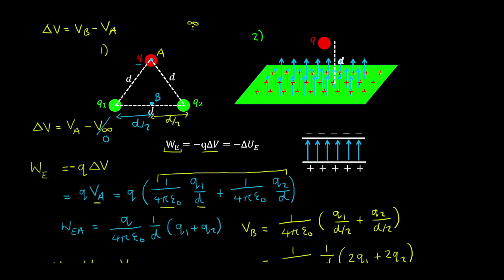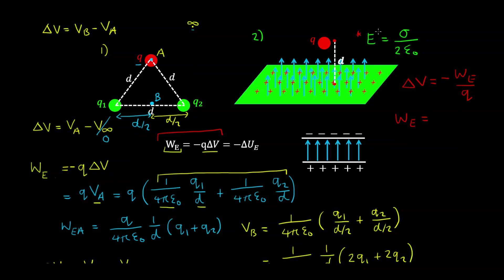Now let's look at the second scenario where we have an infinite plate. The electric field of this infinite positively charged plate has a magnitude of the charge density over 2 times the permittivity constant, which we'll prove later on. We want to find the change in potential when this test charge Q is moved from a point on the plate to a point at a distance D from the plate. We use the relationship that the change in potential equals minus the work done by the electric field on Q. For this special case of a uniform field, we simply multiply the electrostatic force by the distance the charge is displaced — the magnitude of charge times the electric field equals the electric force, and multiplying by the distance gives the work done.